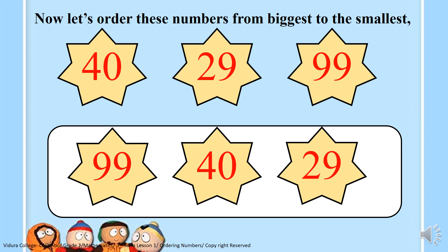Now let's order these numbers from biggest to the smallest. These numbers have already been ordered and done for you — starting from the biggest, finishing with the smallest. So we had 40, 29 and 99. We start from the biggest number, which is 99. Then we put the next big number, that is 40. And the small number would be 29.